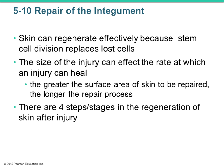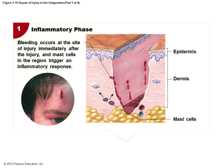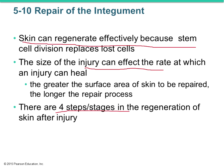Looking at repair of the integument — how the skin is repaired when injured. Skin can regenerate effectively because of the stem cell division system already in place. If you damage the skin, those cells start dividing and replace what's lost. However, the size of the injury affects how quickly it heals — more skin damage means longer repair time.